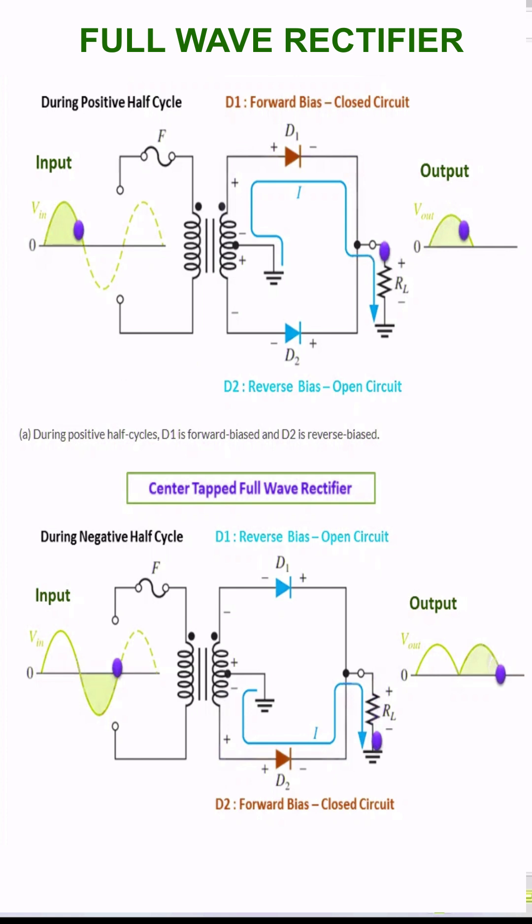During the negative half cycle, the diode D1 is reverse biased and the diode D2 is forward biased because the top half of the secondary circuit becomes negative and the bottom half of the circuit becomes positive.